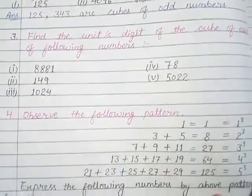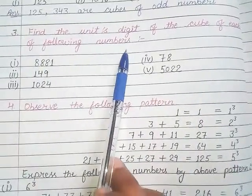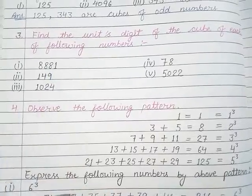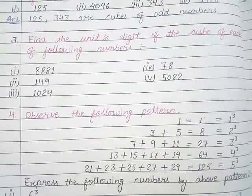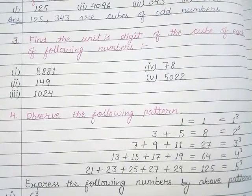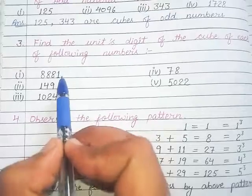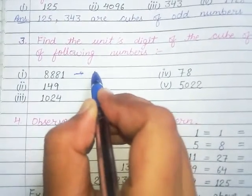And the next third question is, find the unit's digit of cube of each of the following numbers. You have to find out the cube's unit digit. So I said that you only need to learn 2 and 3. We know that for most digits, the cube's unit digit is the same as the original unit digit.